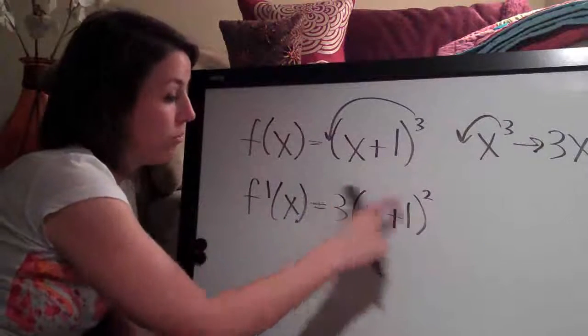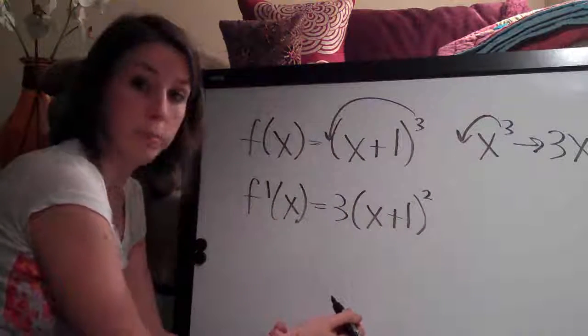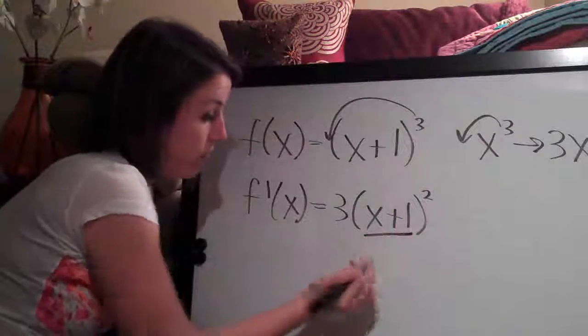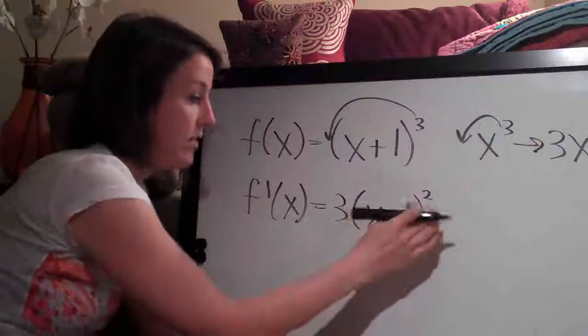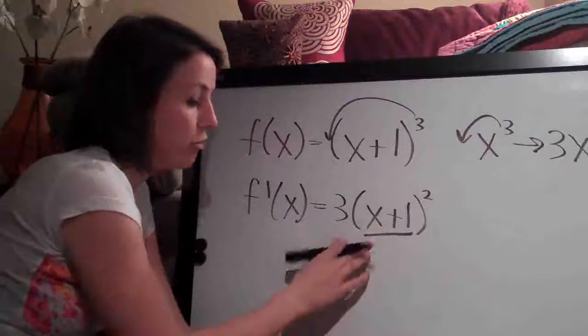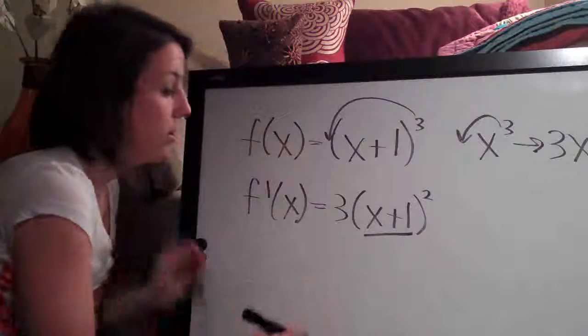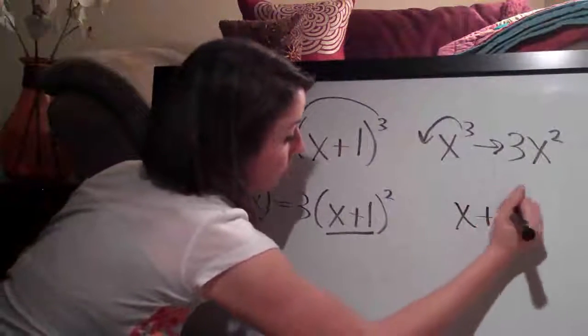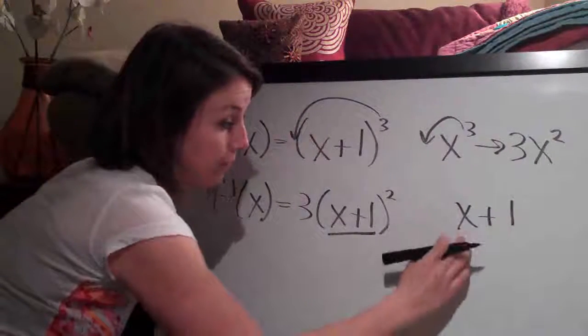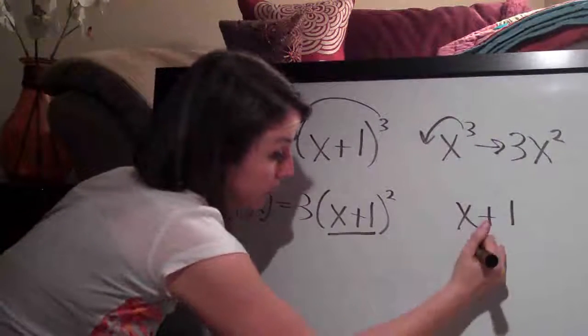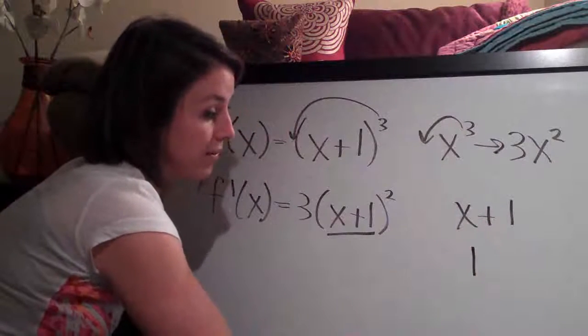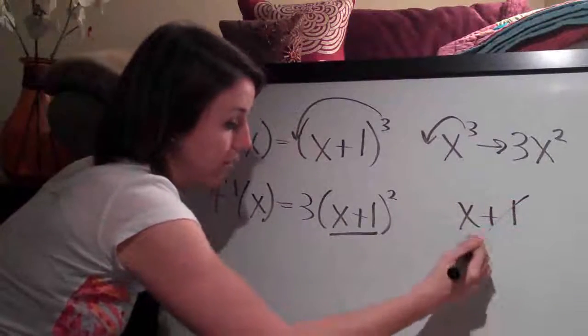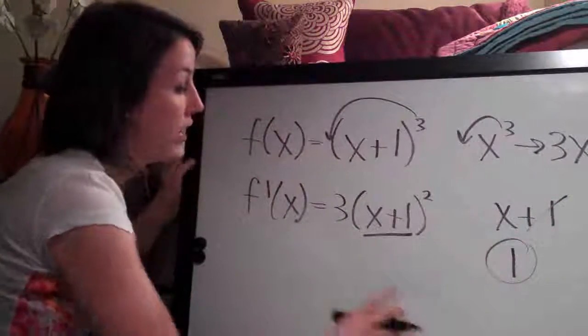We multiply what we have by the derivative of the inside. So we take the derivative of the outside and then multiply by the derivative of the inside. So the derivative of x plus 1, the derivative of x is simply 1 and then the derivative of 1 is 0. Of course it's a constant, that goes away so the derivative here is just 1.